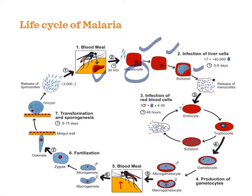After five to six days, from one sporozoite, about forty thousand sporozoites are formed in the liver cells. The infected liver cells then rupture, releasing merozoites. These merozoites enter red blood cells, start dividing again, rupture again, and continue infecting more red blood cells. This multiplication cycle in red blood cells repeats every 48 hours.